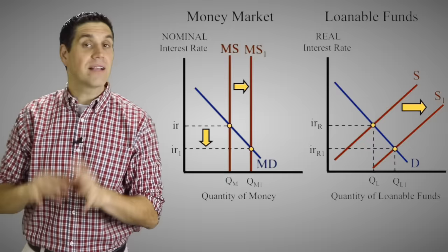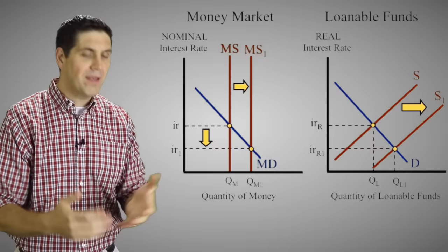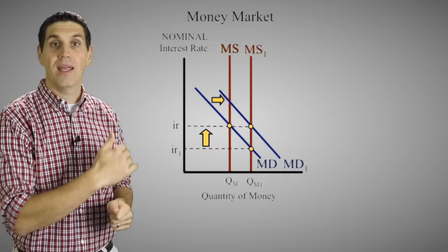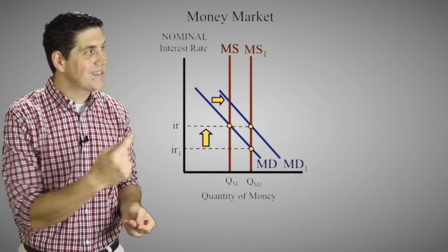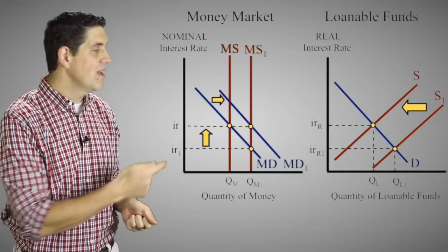A decrease in nominal interest rates leads to more spending, which in the long run leads to higher prices. That causes demand for money to increase, putting the nominal interest rate right back to where it was. Since that money is being used for transactions, there isn't really more money available to be lent out, so the supply of loanable funds shifts left, causing the real interest rate to go right back to the natural rate of interest.